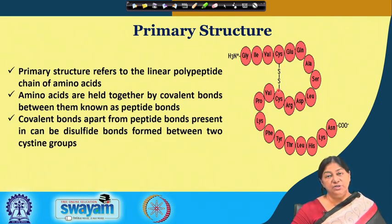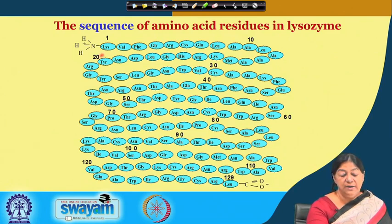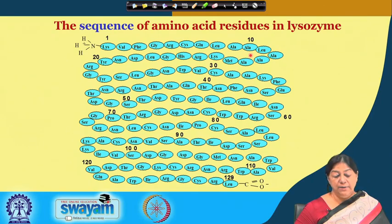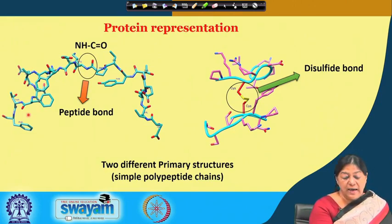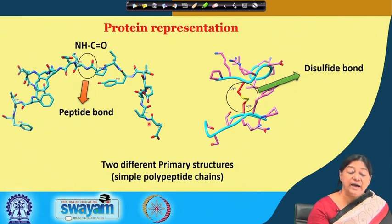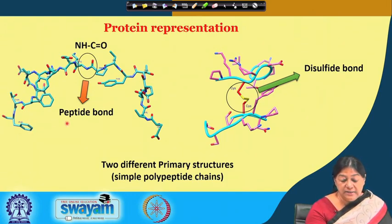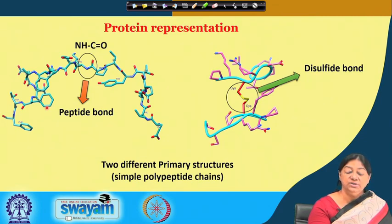Apart from peptide linkages, proteins have disulfide linkages between cysteine residues. For example, in lysozyme's primary sequence, we only need to know the type of amino acid side chain because we know how they are linked through peptide bonds. Looking at a specific protein representation, we can see the NH and C=O of the peptide bond, allowing us to determine directionality. Just by looking at the specific structures, we can identify residues — for example, this is a phenylalanine, then a tyrosine — because each amino acid residue has a unique structure.